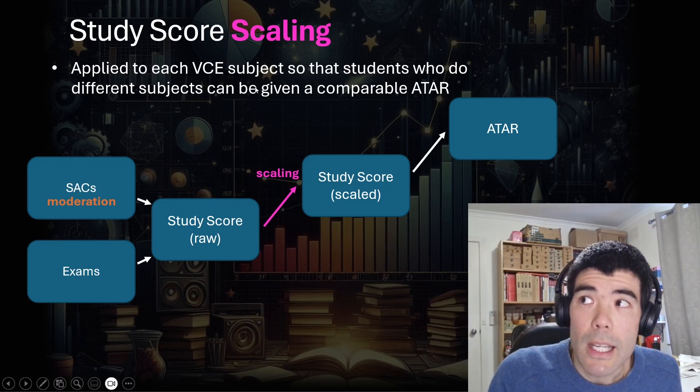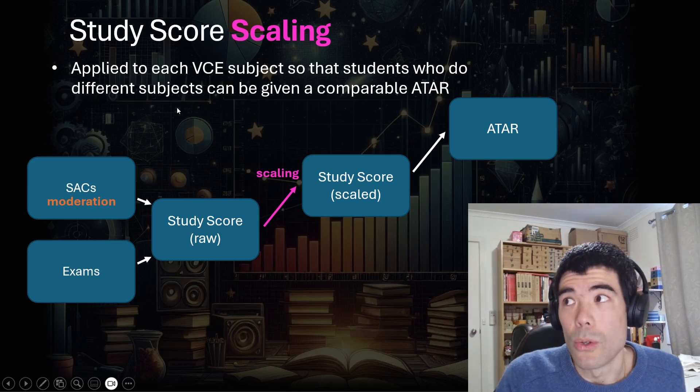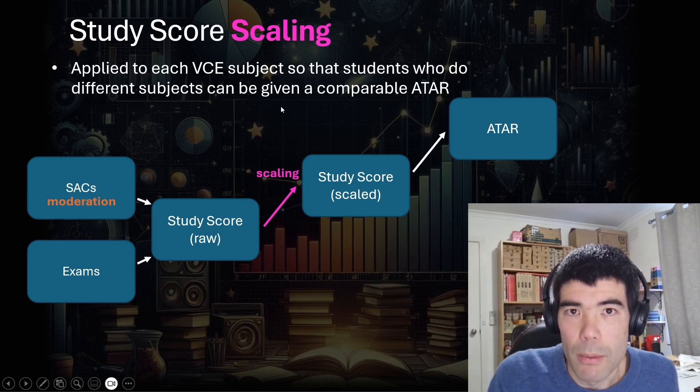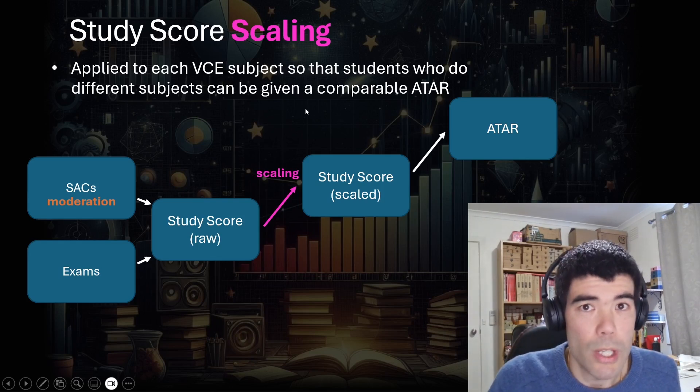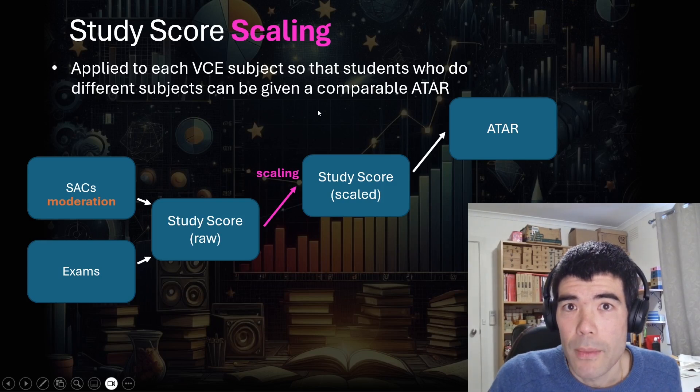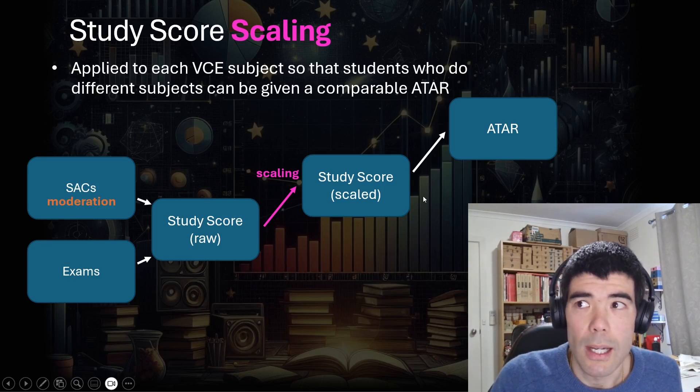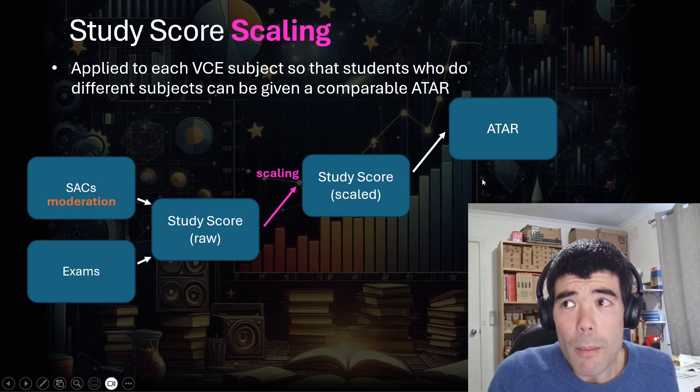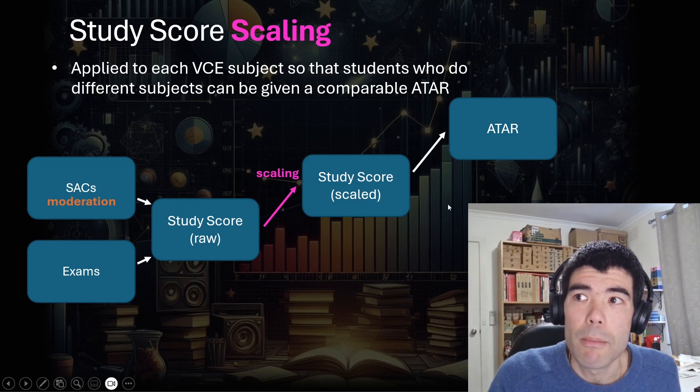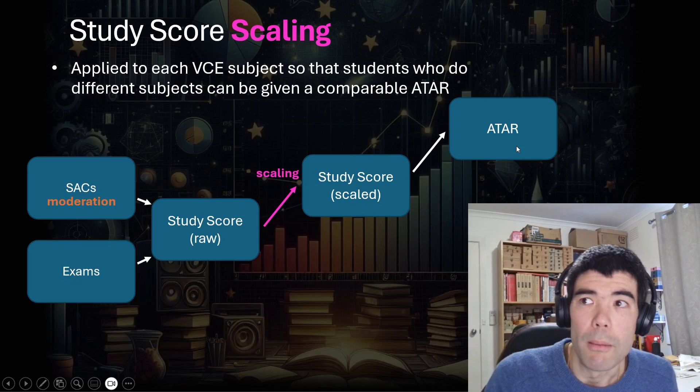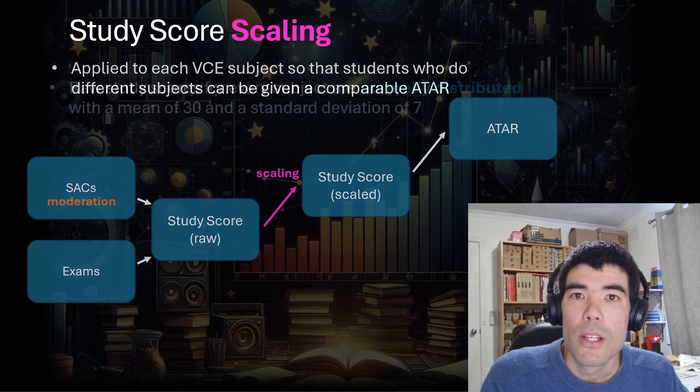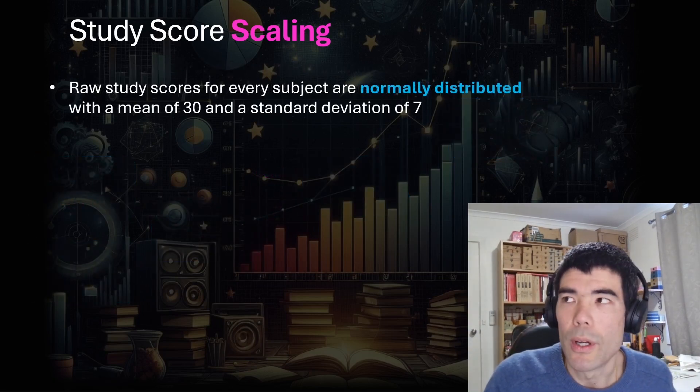So scaling is applied to each subject so that students who do different subjects can be given a comparable ATAR, because you can choose whichever subjects you like, and you have to do one of the Englishes. But besides that, you can pretty much choose which subjects you like. But then all those students doing all the different subjects need to be given an ATAR, which is comparable for university entrance ranking.